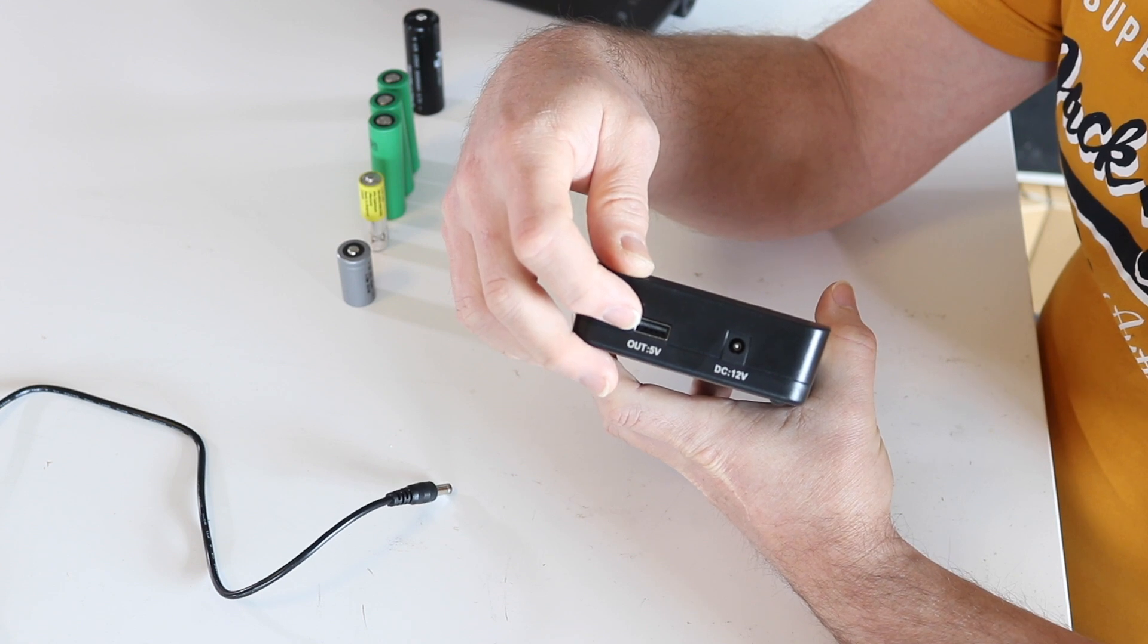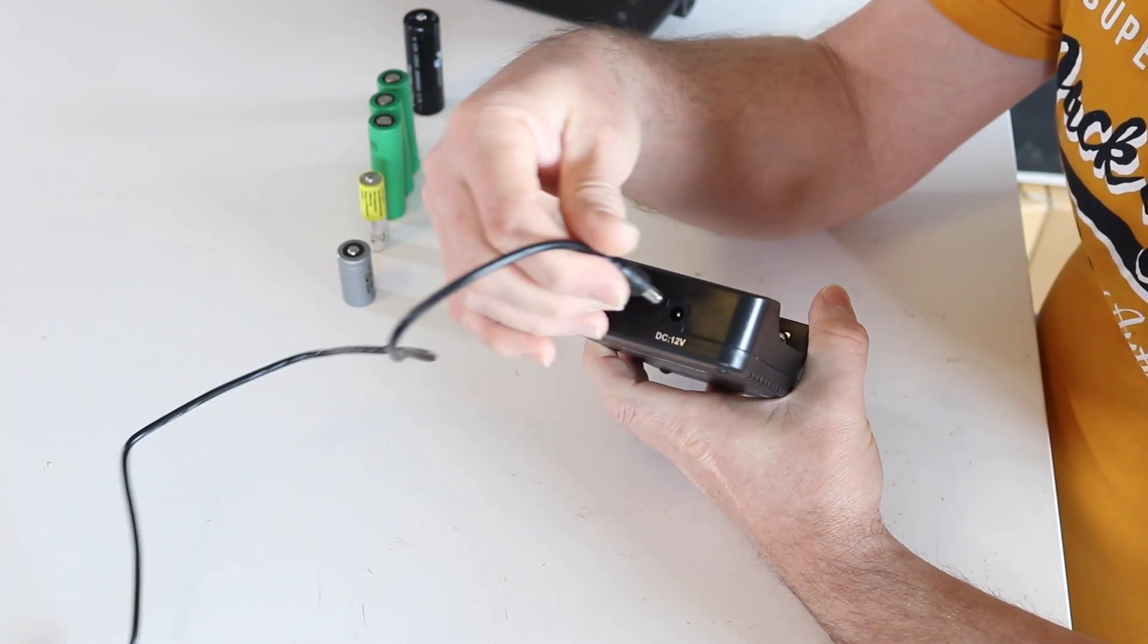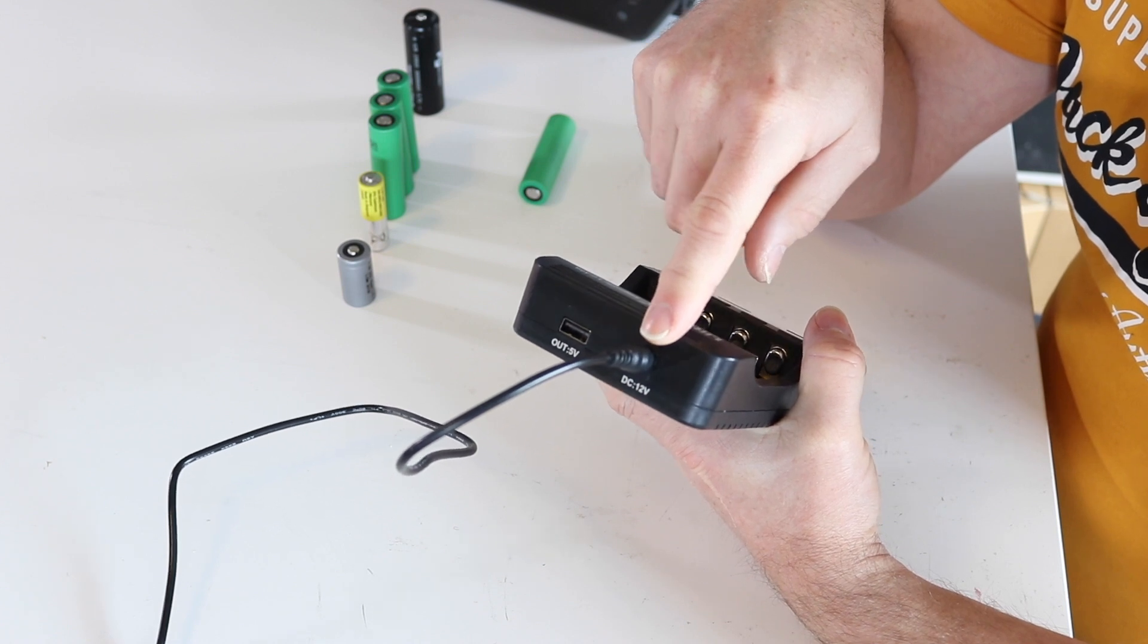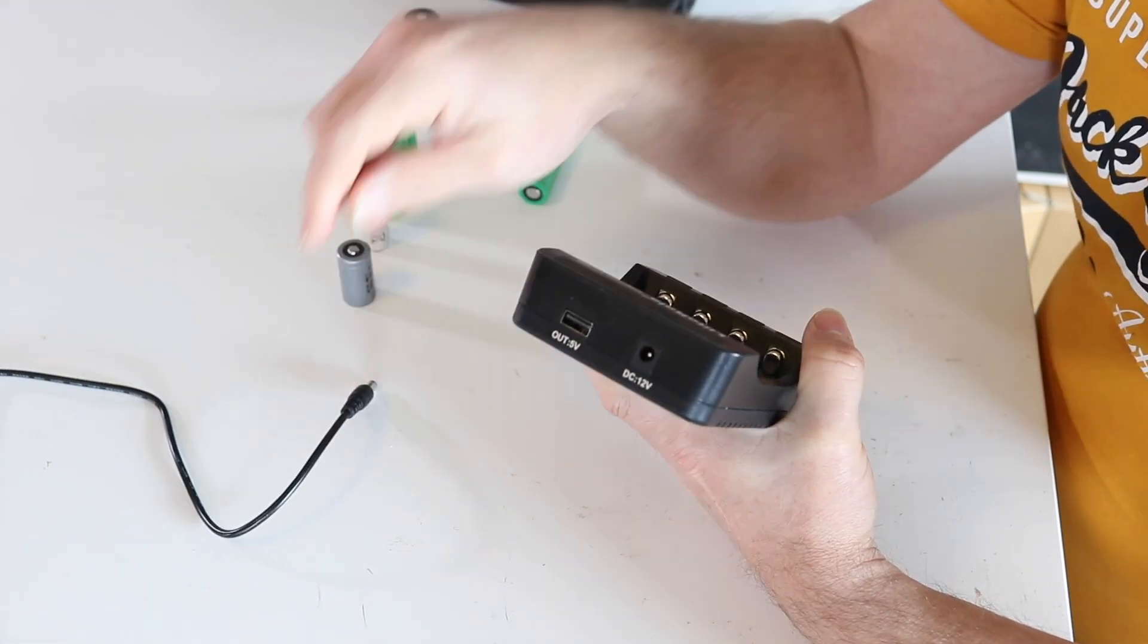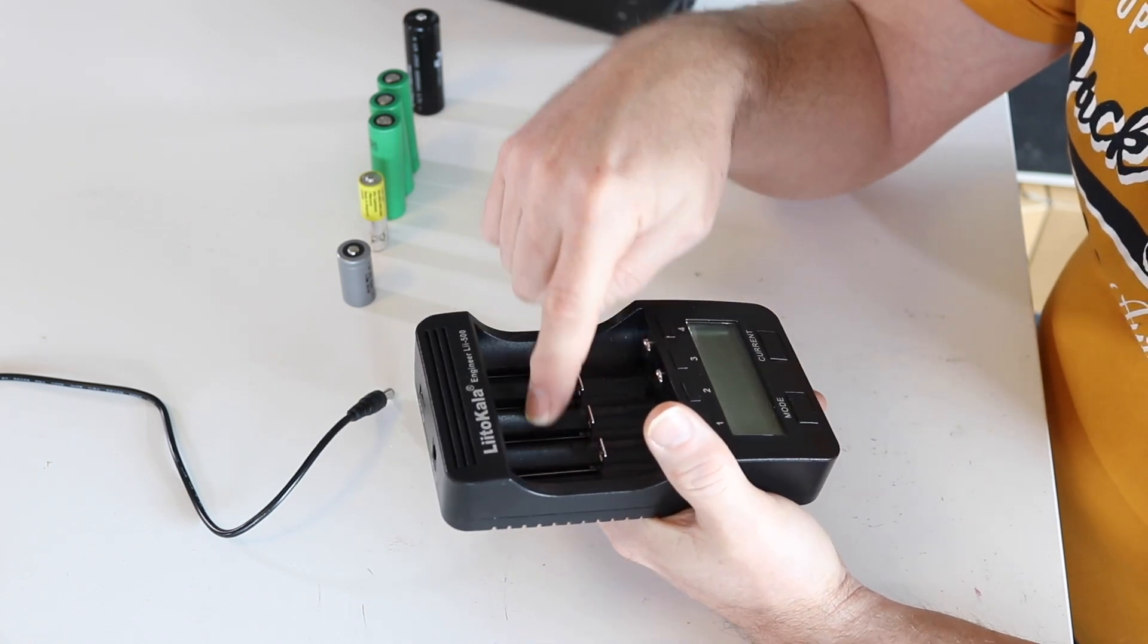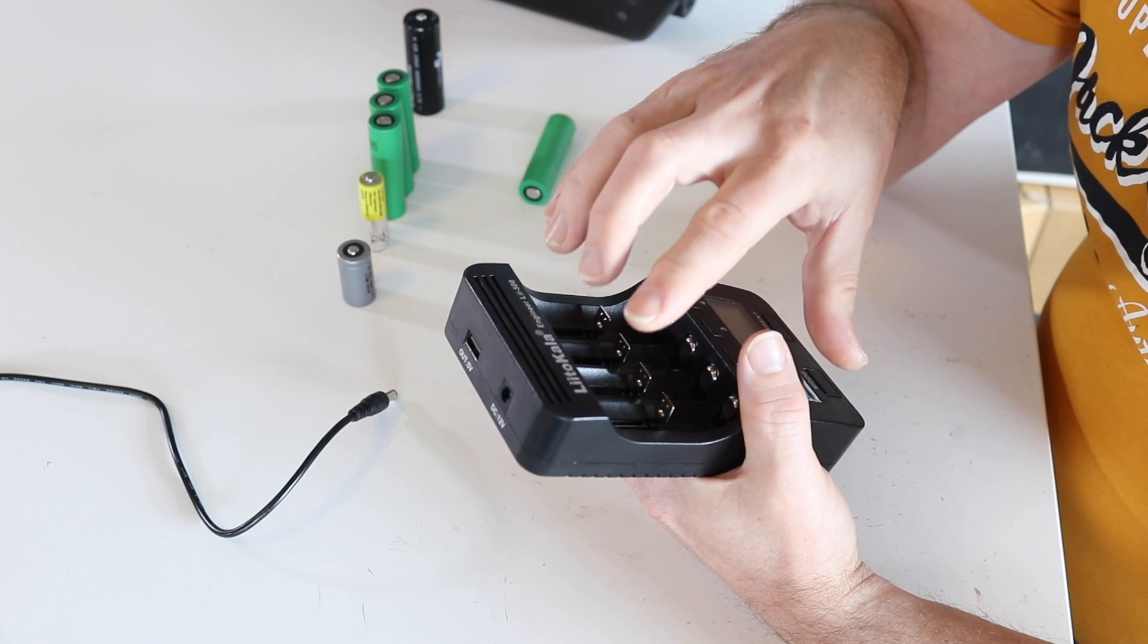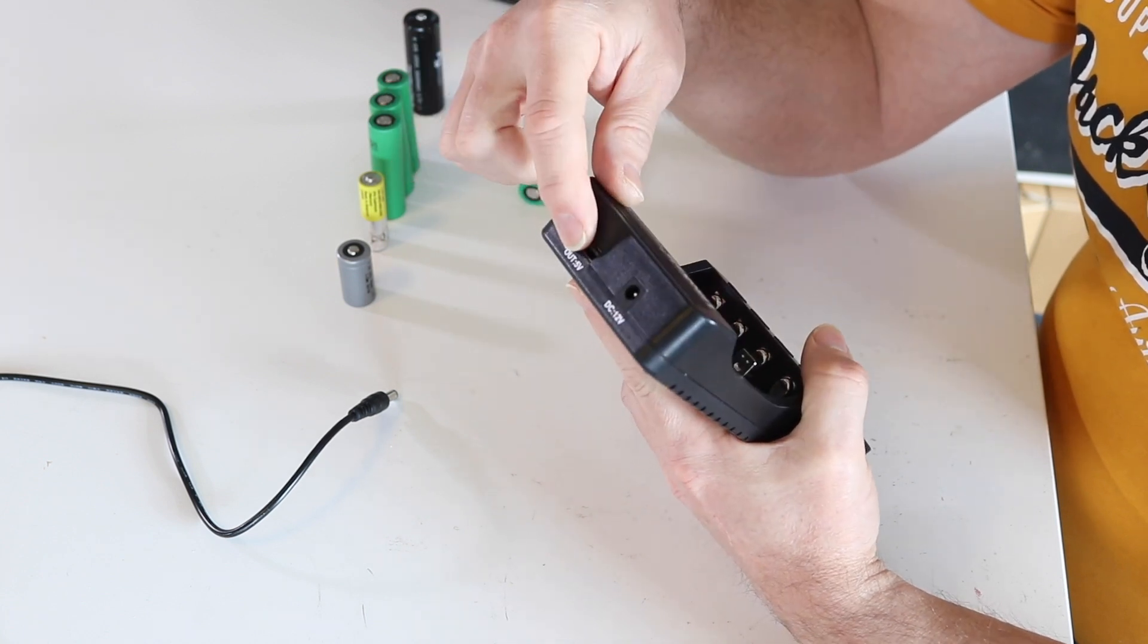This 5-volt USB output cannot be used when it is connected to the mains, but you can use it when, for example, you put in four cells—then this is actually a power bank for your USB.